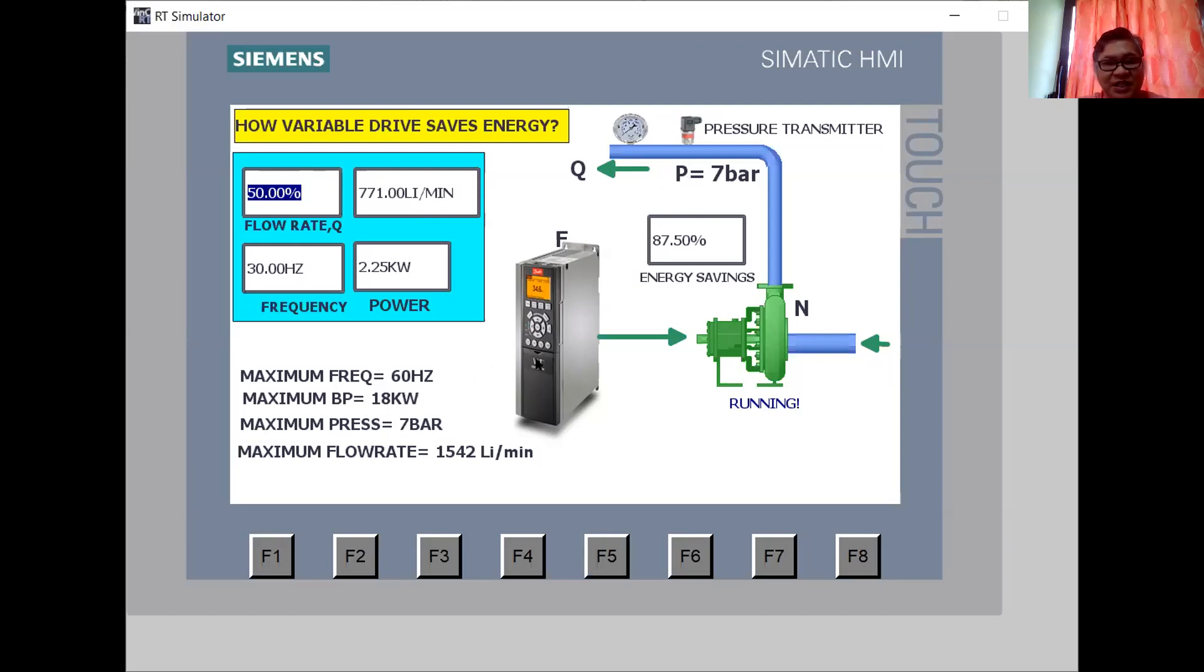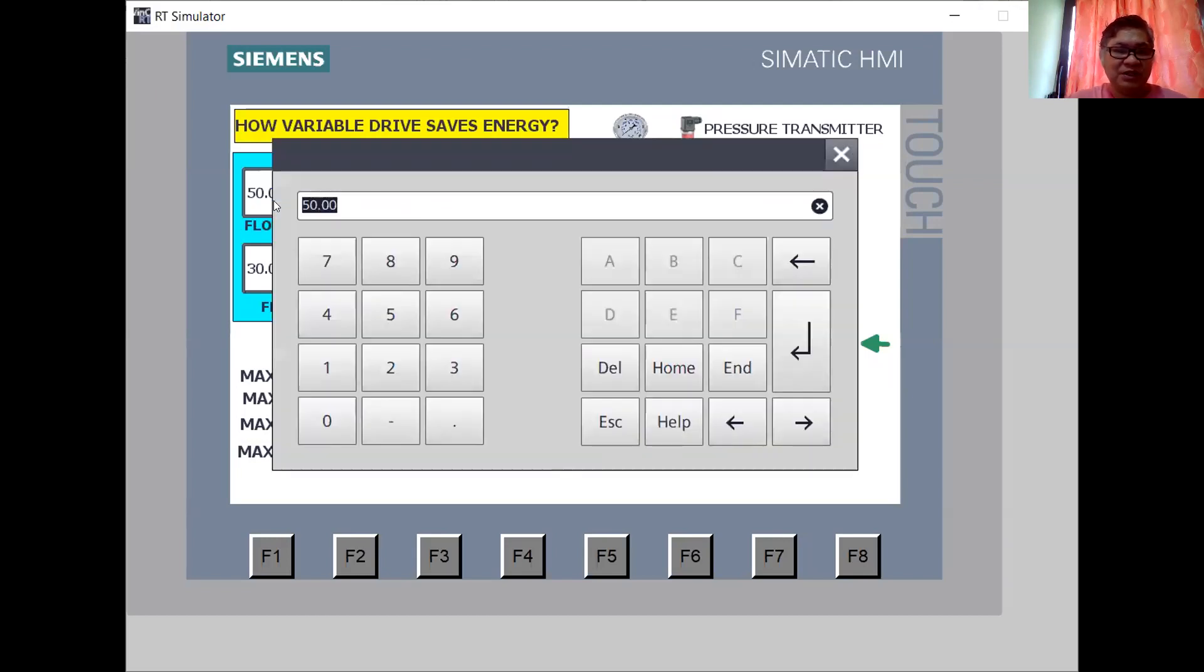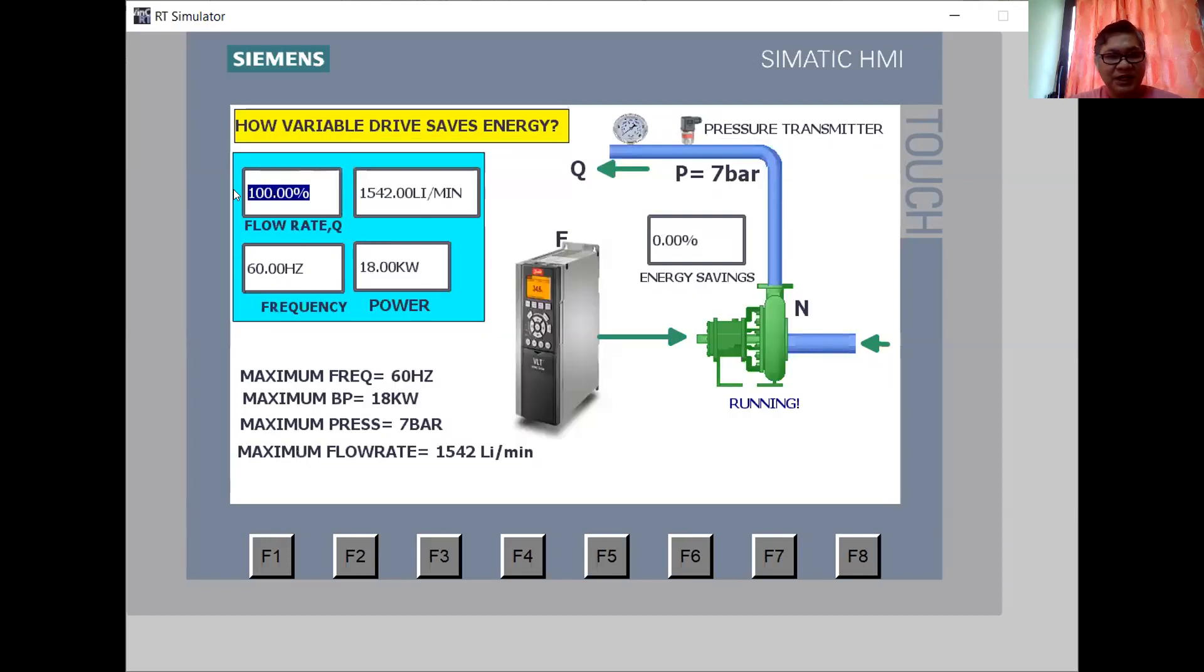Assuming pressure is 7 bar constant, the maximum frequency in the Philippines is 60 hertz, the brake power maximum of the motor is 18 kilowatt, and maximum pressure of 7 bar. We have maximum flow rate of 1,442 liters per minute. If I adjust the flow rate to 100%, you see on my left, you don't have energy savings.